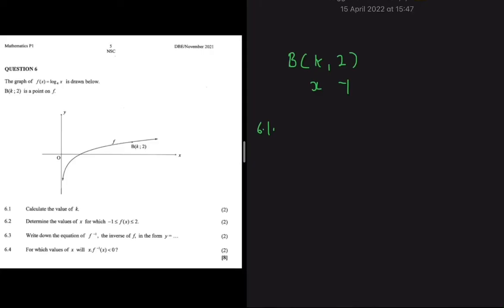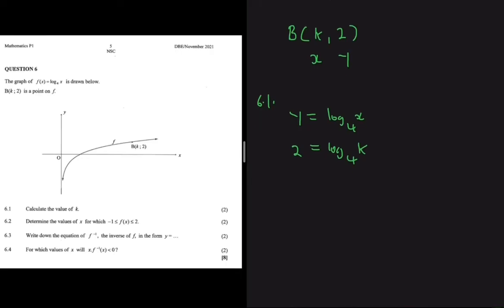Since k is the x-coordinate of B, we substitute into the function. Our function is y = log base 4 of x. In place of y we put 2, because that is the y-coordinate of B, and in place of x we put k, because that is the x-coordinate of B. Now the only variable is k, which is what we are solving for.